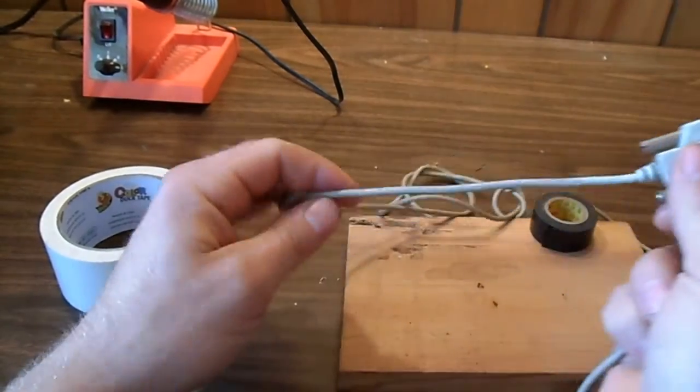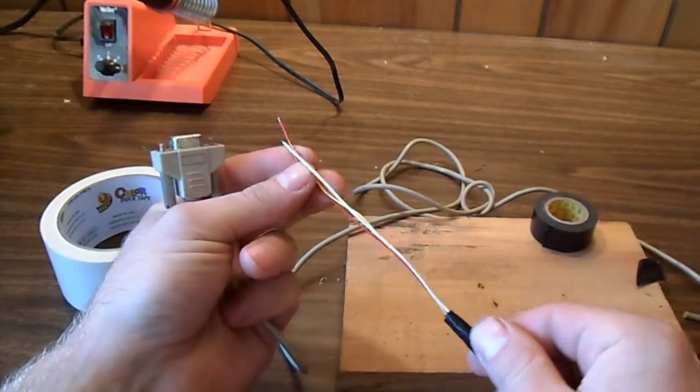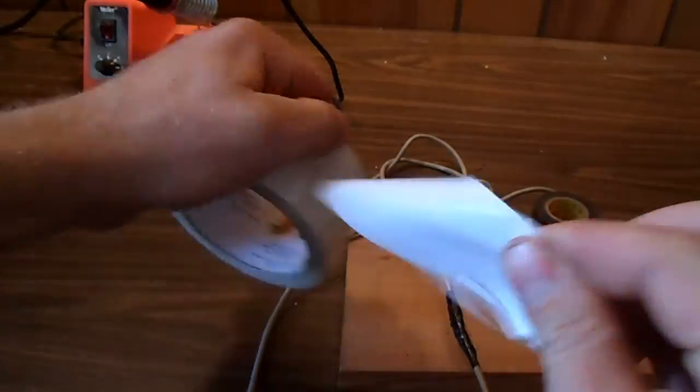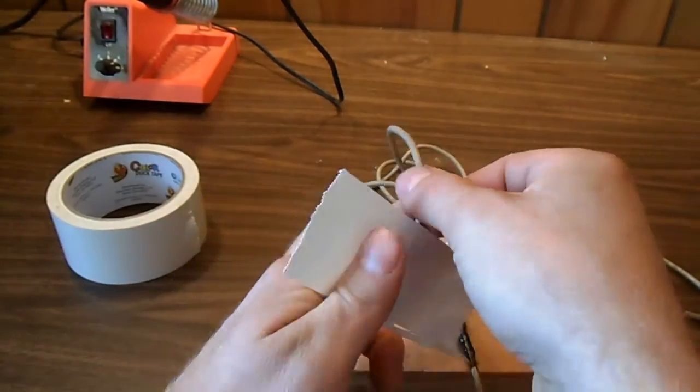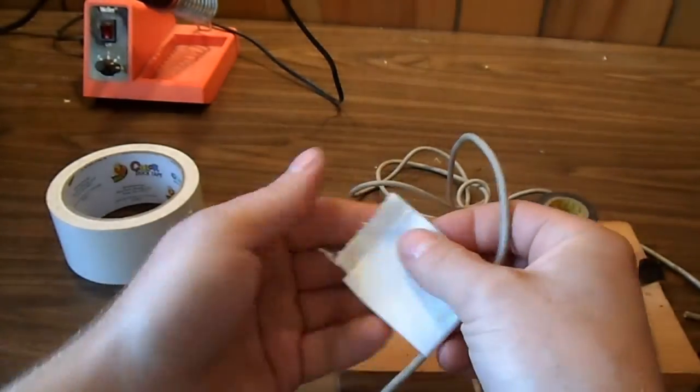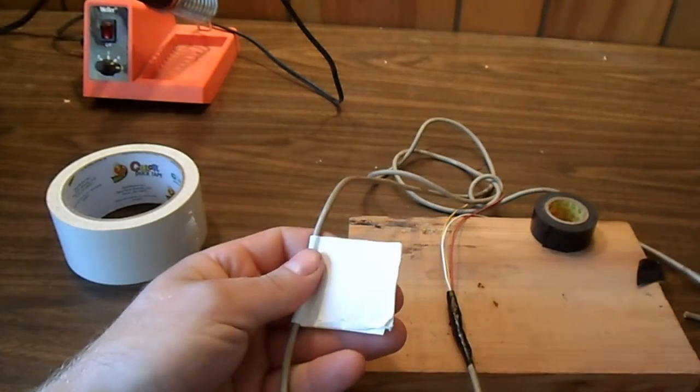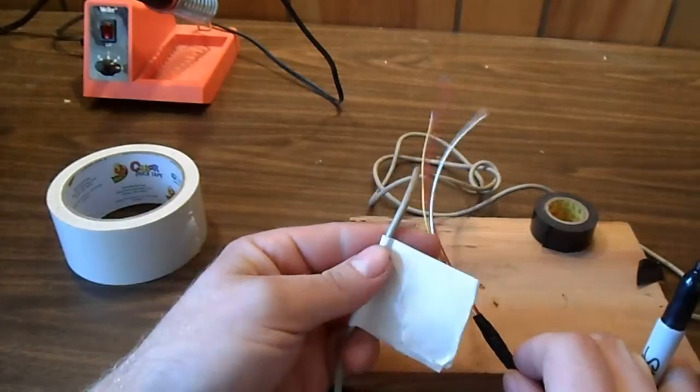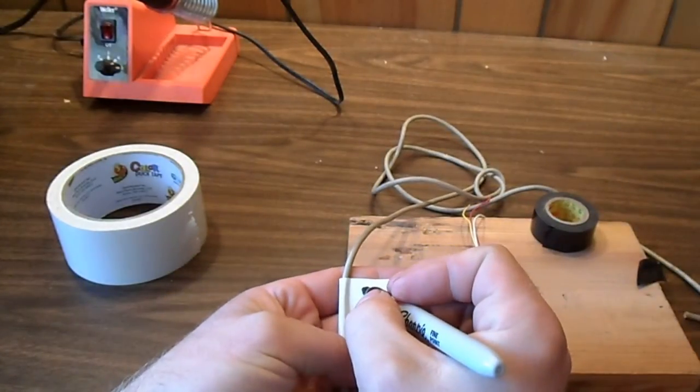Now, we have to put a label on it so we don't forget our color scheme. And write the scheme. I did white for ground.